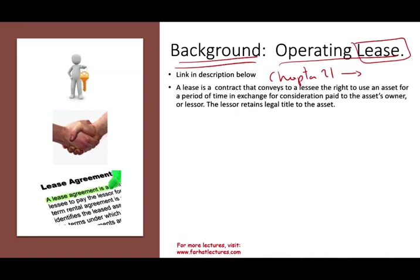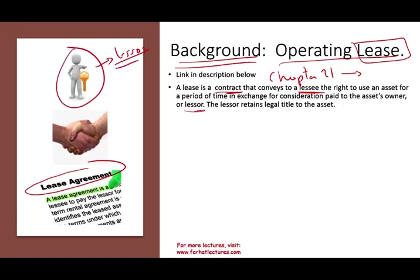So what is a lease? A lease is a contract — a lease agreement — that conveys to the lessee the right to use an asset for a period of time in exchange for consideration paid to the asset owner, the lessor. Think about leasing a car: the car dealer is the lessor and you, the lessee, are the one making payments. The lessor retains legal title to the asset.